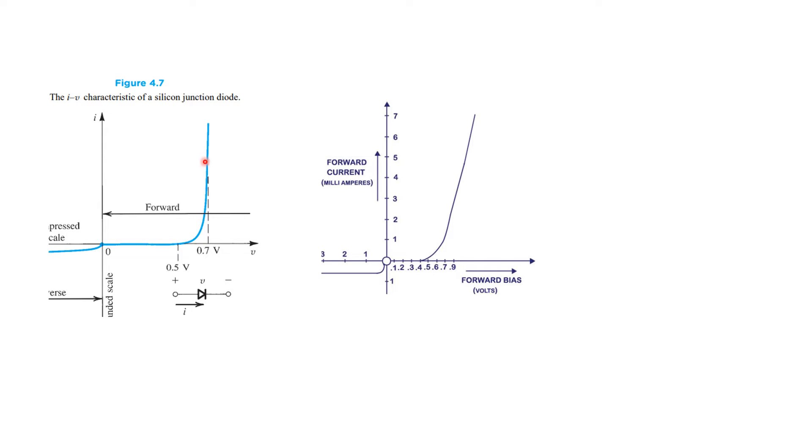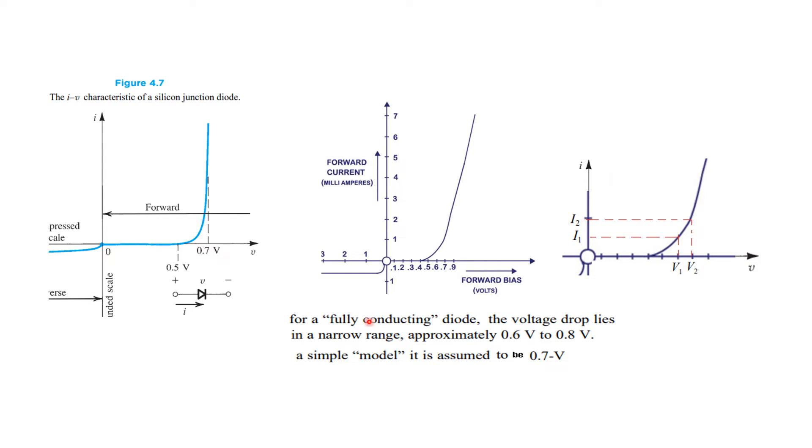Now recall that we use this characteristic curve and generally we say that at 0.7V the diode fully conducts, but it is not exactly like this. For a fully conducting diode, the voltage drop lies in a narrow range of approximately 0.628V. In the simple model it is assumed to be 0.7V. Keeping this in mind, we could have two voltages: V1 related with current I1 and V2 related with current I2.